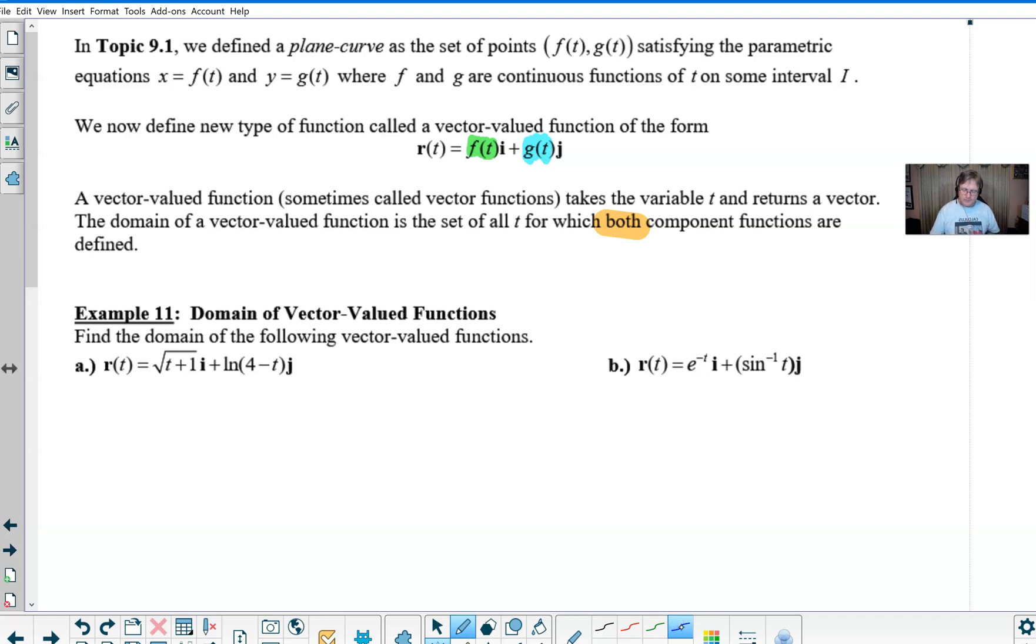Let's take a look at a couple of examples from number 11. Find the domain of the following vector-valued functions. The very first thing I would do to organize this is take apart the i component here and just focus on what it has to offer. We know that the only way that this square root of t plus one can be defined is if all the stuff underneath the square root avoids being negative. It can be positive or zero, but it cannot be negative.